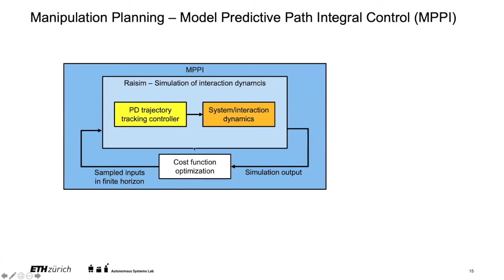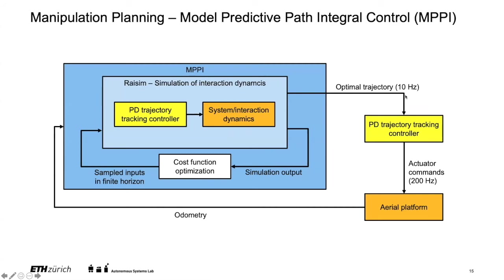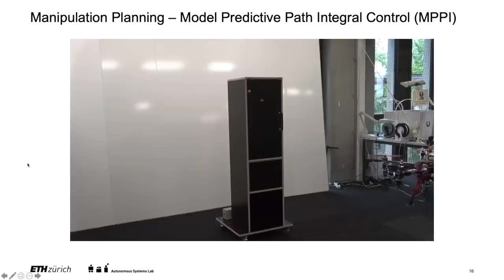We use the RaiSim physics simulator, which already includes the PD trajectory controller applied by the drone. This simulates at a high rate the system interaction dynamics and tries to minimize a cost function — the cost is minimized when the door is open. This gives us an optimal trajectory at 10 Hz, tracked by the PD controller which sends actuator commands to the platform and then updates MPPI again with the current odometry.